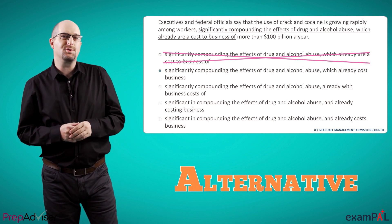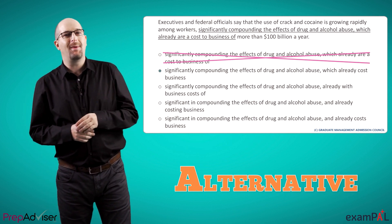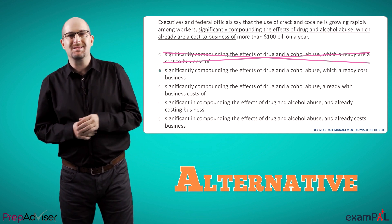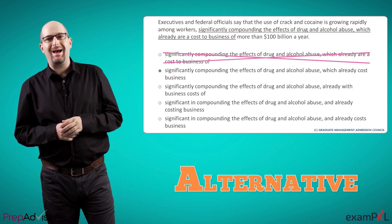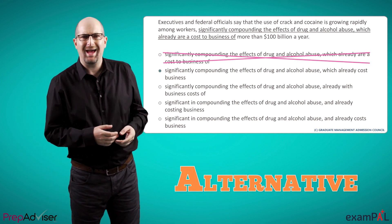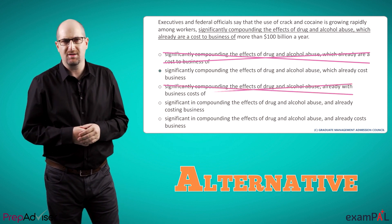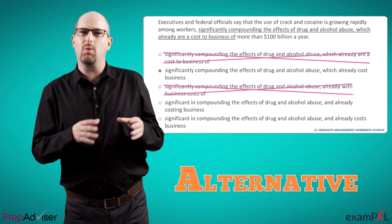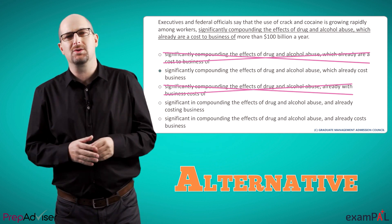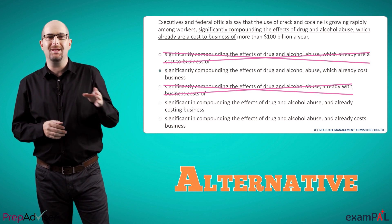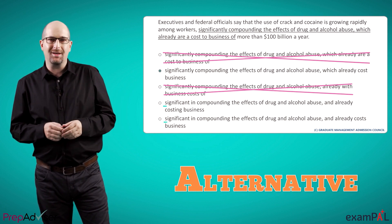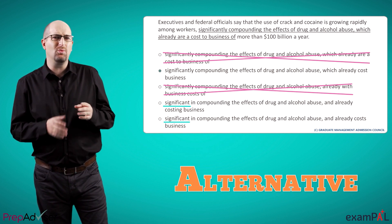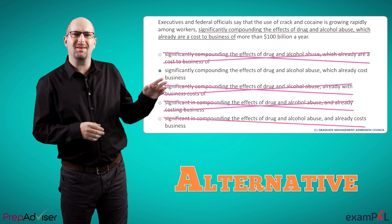B looks good — it doesn't have the problem A had. The drugs are presented as costing, not as being a cost. But unless we're 100% certain that everything is right with it, we should look at the other options as well. C is problematic, since the phrase 'already with business costs of' makes it sound as if the drugs and alcohol themselves have business costs, and not as if they create costs. Sometimes different answers will share certain characteristics, which we can check once and thus eliminate a few answers at once. An example of this is D and E: 'significant' as opposed to 'significantly' is wrong, as it's not clear what it refers to. Thus we can eliminate them together.